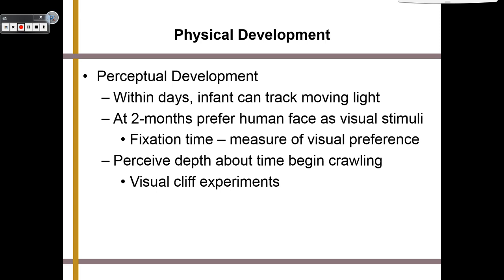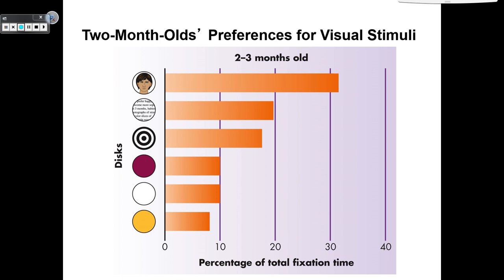Here is another famous experiment. We would show discs to babies and by about two to three months old, we would measure how long they stared at each disc — this is known as their fixation time. The yellow, white, and plum-colored discs didn't really get a whole lot of preference. The interesting target got a little bit, almost at 20% for just random words. But when we put a human's face on the disc, they stared at that one overwhelmingly more than any of the others.